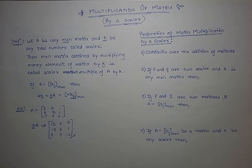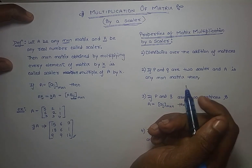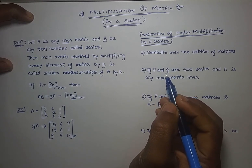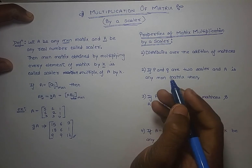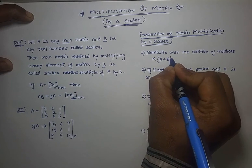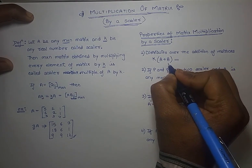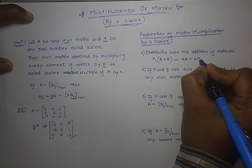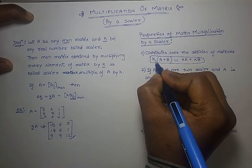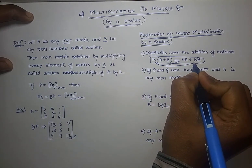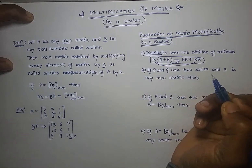Now let's move on to the properties of scalar matrix multiplication. The first property is that addition of matrices is distributed in scalar multiplication. It means that if k is any scalar and we multiply it with the addition of matrices A and B, then k gets distributed: k(A+B) = kA + kB. This is the distributive property over addition of matrices.